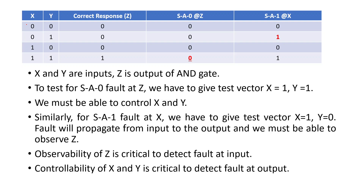Let us take a simple example of an AND gate. X and Y are the inputs and Z is the output. Looking at the correct response column for the AND gate: if inputs X and Y are both zero, output is zero. Comparing with the stuck-at-zero fault at Z column, the only difference is when both inputs are one — the output should be one but is zero. So to detect the stuck-at-zero fault at Z, the test vector is X=1 and Y=1.